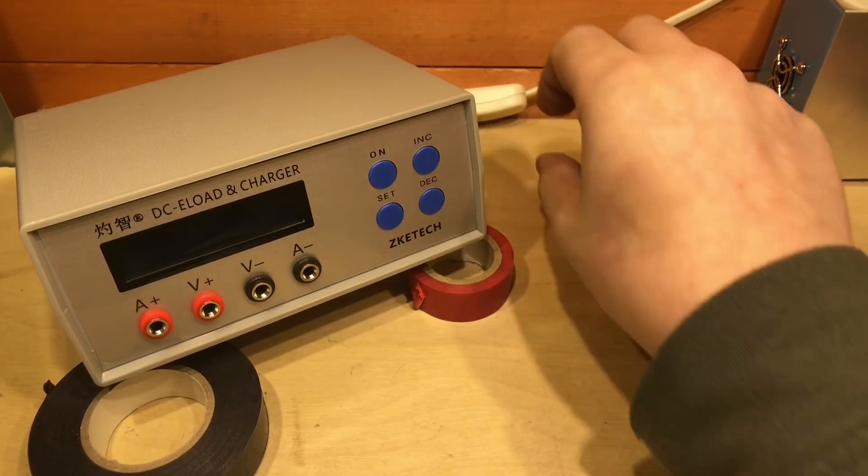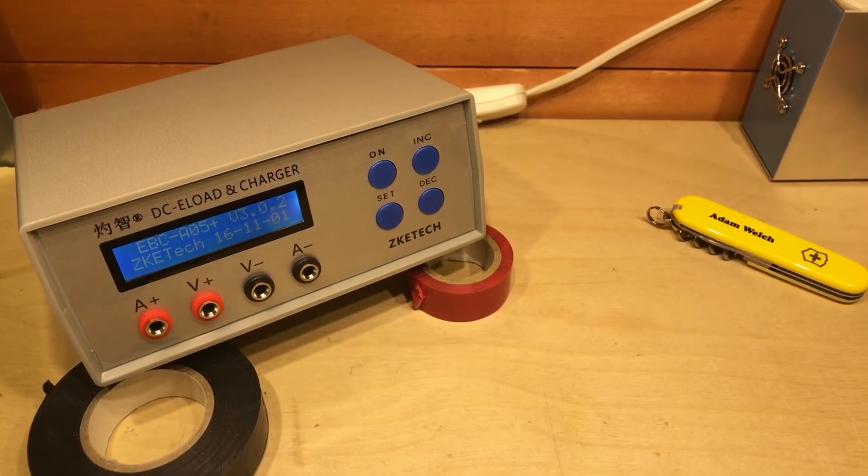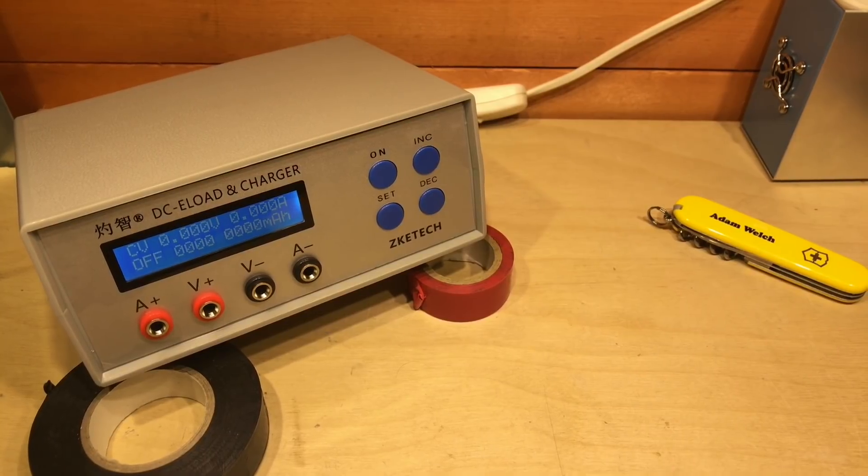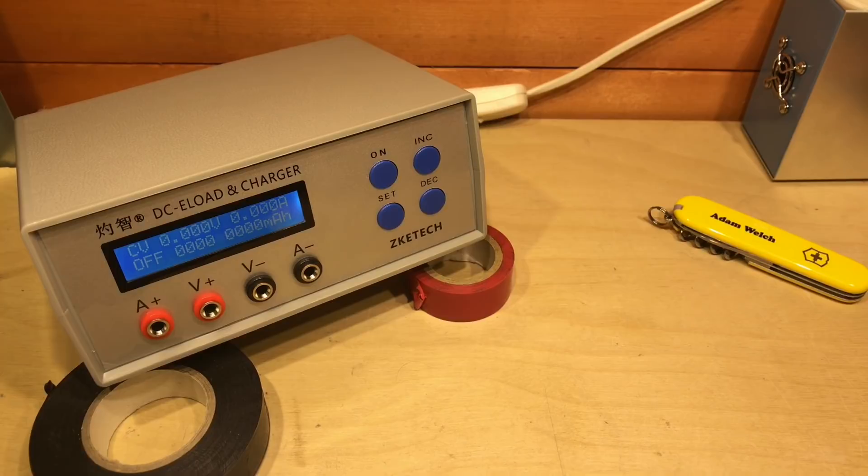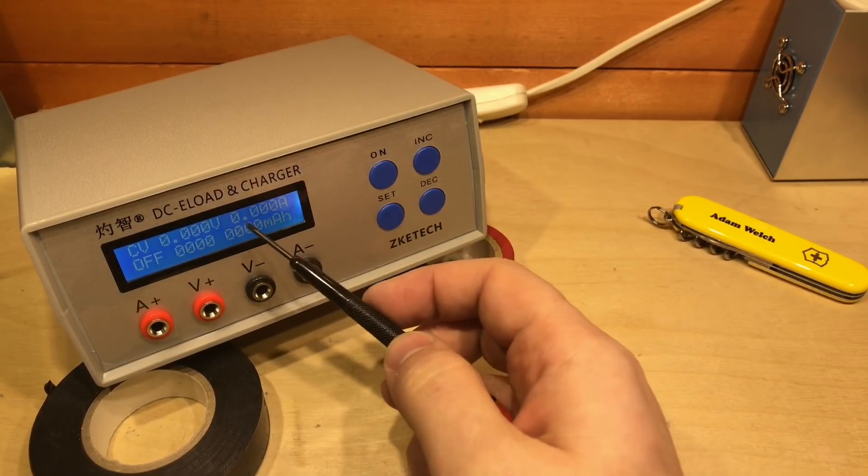So I've propped this up on a bit of tape, and if we turn it on, this is now powered by my battery bank here. We can see the firmware version there and just about make out everything on the screen. And it's showing the voltage measurement here which is obviously zero at the moment.